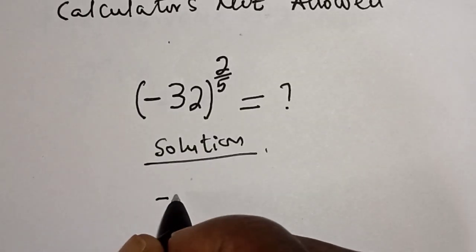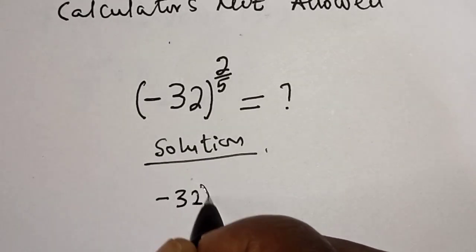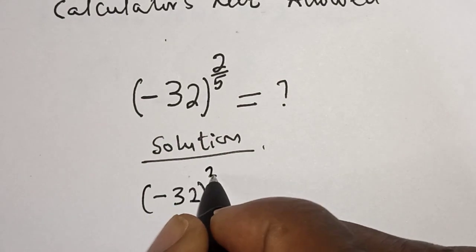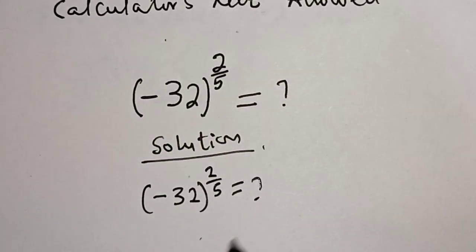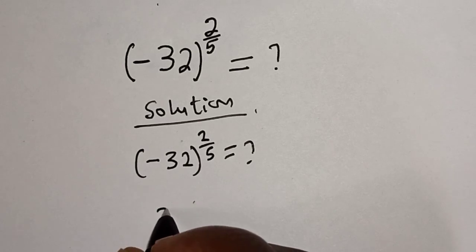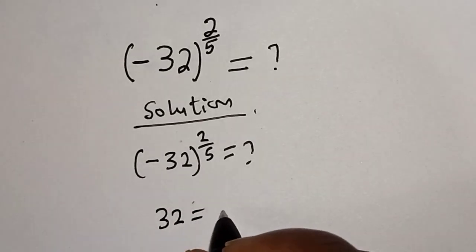Solution: minus 32 raised to power 2 over 5. We don't know the value. Then 32 is equal to 2 raised to power 5.